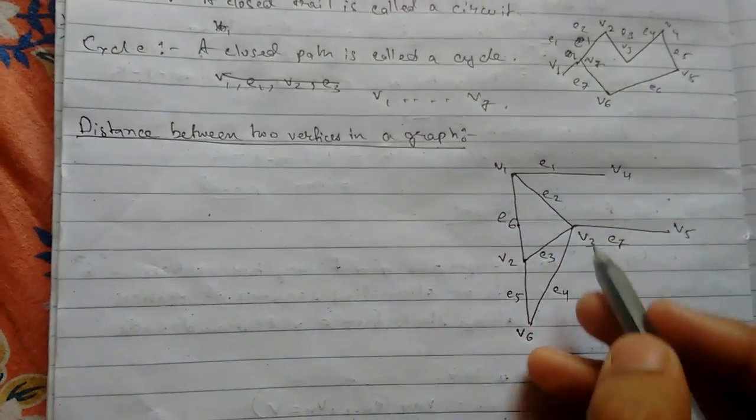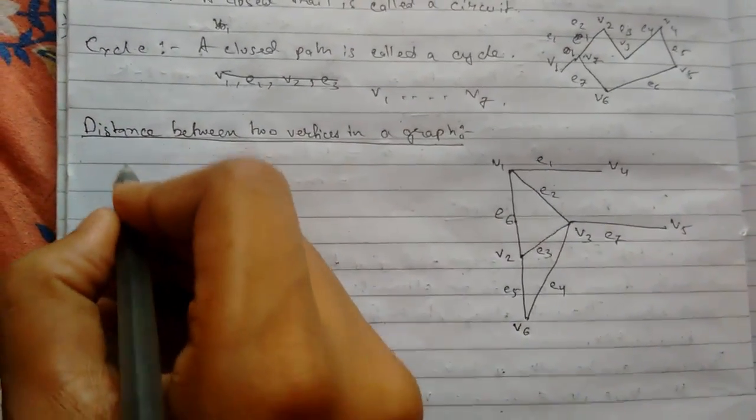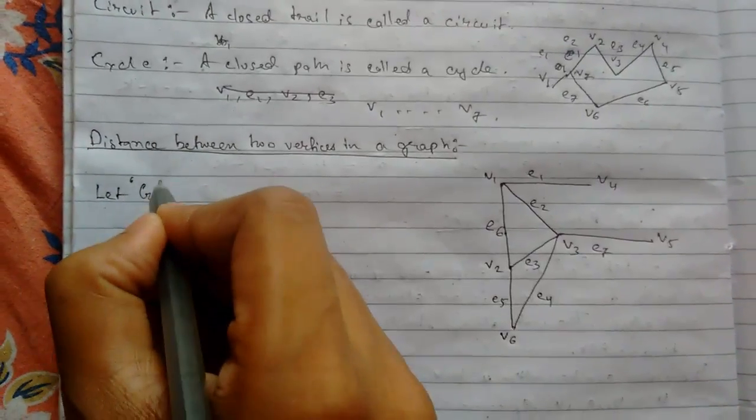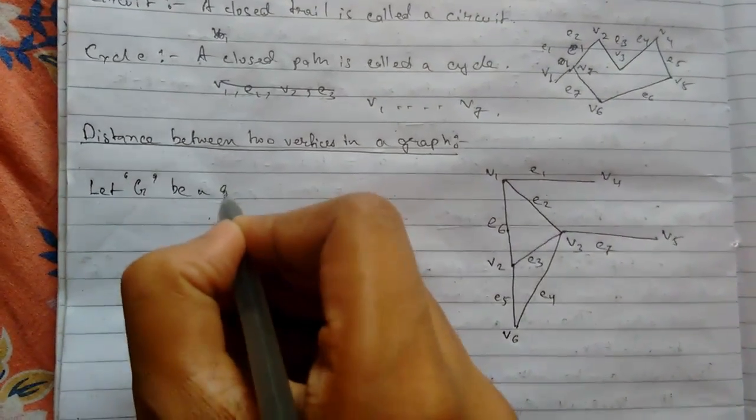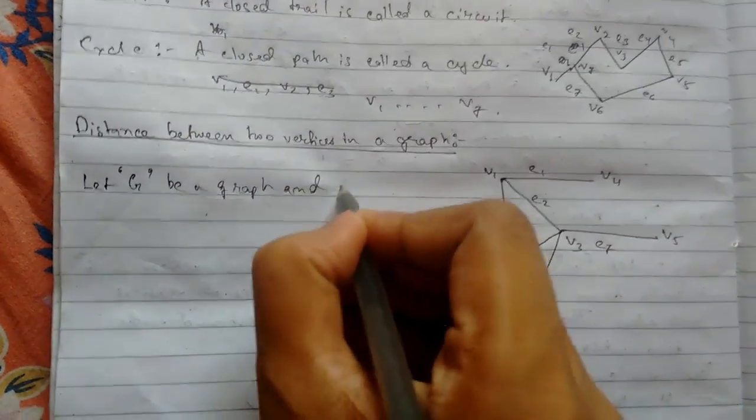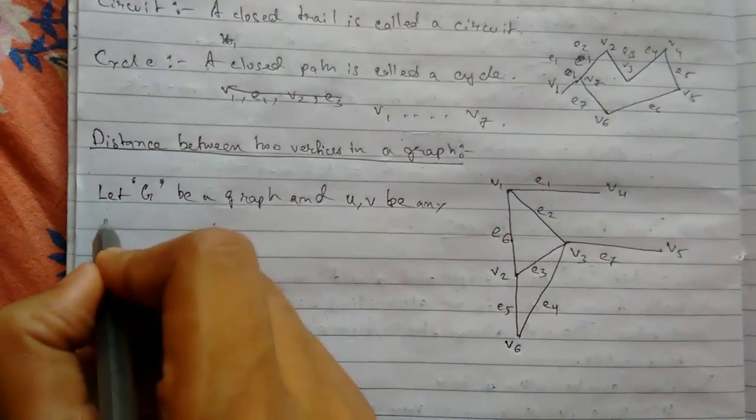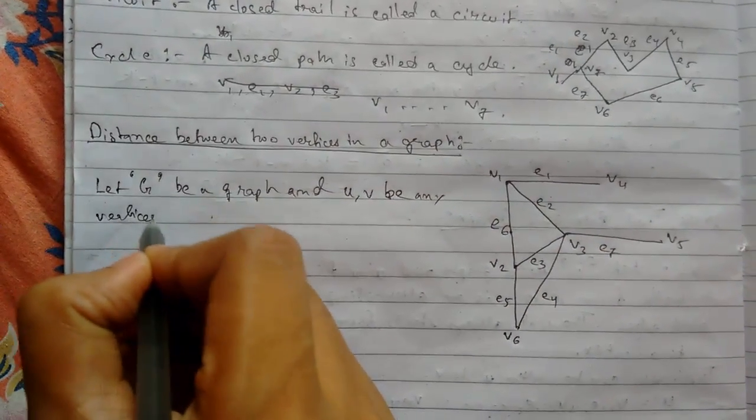So first, distance between two graphs. Let me add the definition. Let G be a graph and u, v be any vertices in graph G.